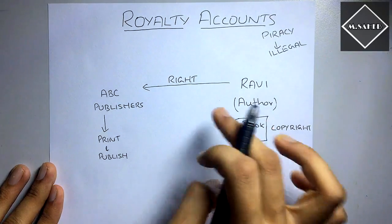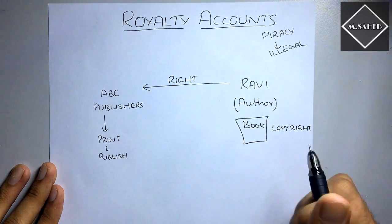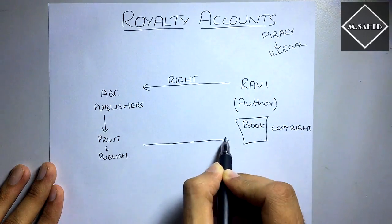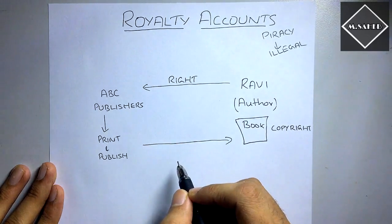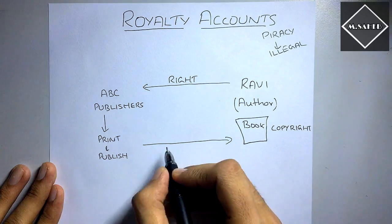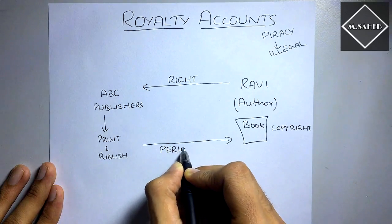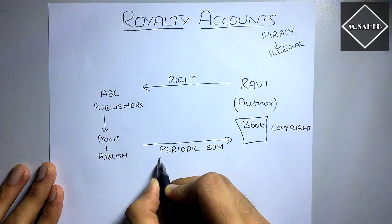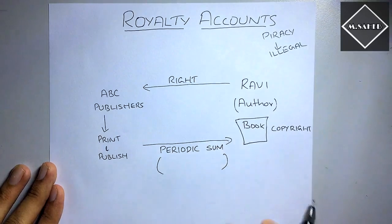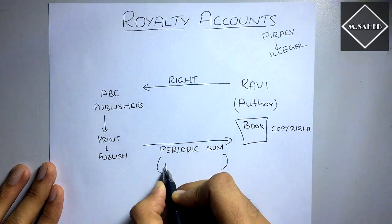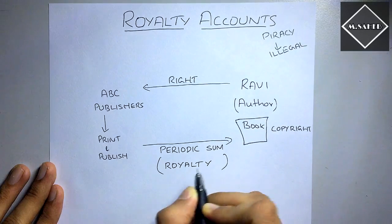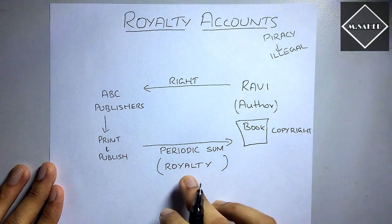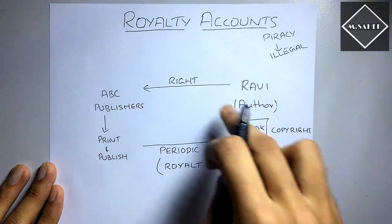Now will he do that for free? Of course not. Everyone gives something and expects something in return. So Ravi is also expecting something from ABC Publishers. ABC Publishers are going to give him a periodic sum — every year, or monthly, or quarterly, depending upon the agreement, but mostly it is yearly. This periodic sum in this chapter is called royalty. It's similar to rent. He is paying the periodic sum to Ravi because he is using the right of Ravi.